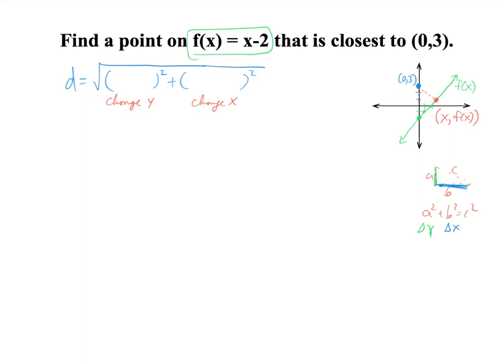Can I also subtract the y values? Can I also go f(x) minus 3? Oh, I did that backwards. Let's go back. The change in y. I said that wrong. The change in y, isn't it this one right here? The change in y is going to be f(x) minus 3. And the change in x is going to be x minus 0. Does that make more sense?